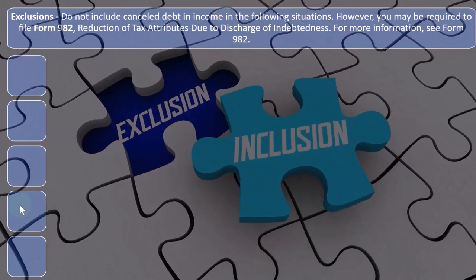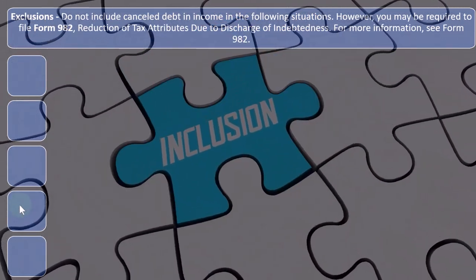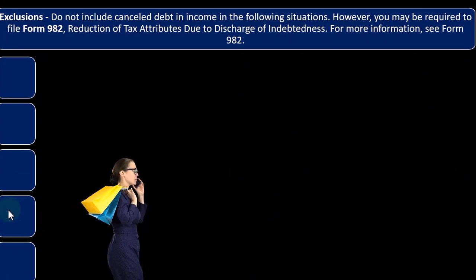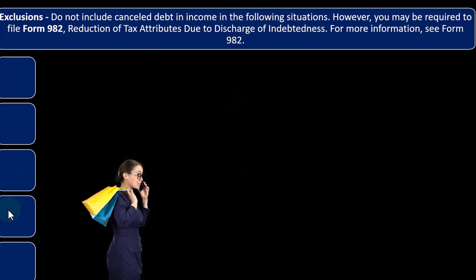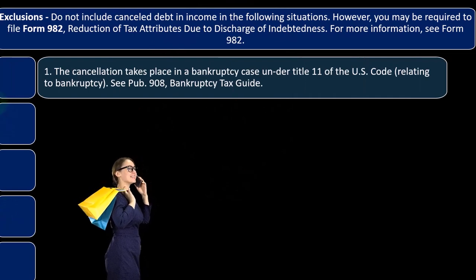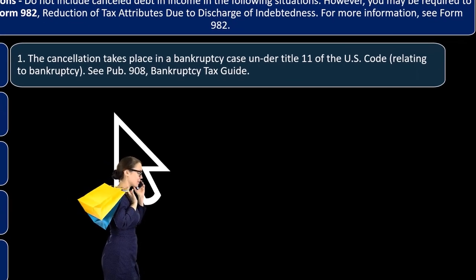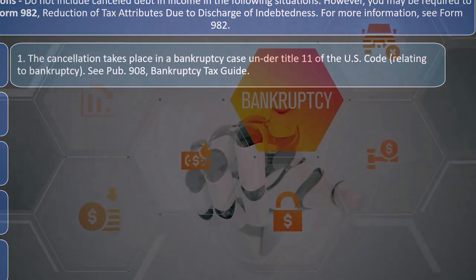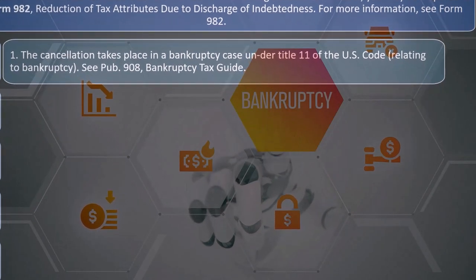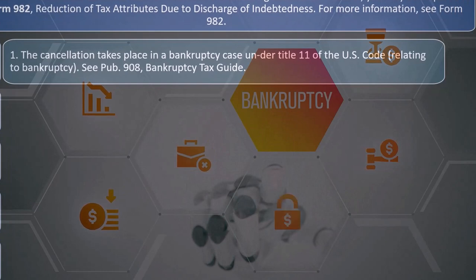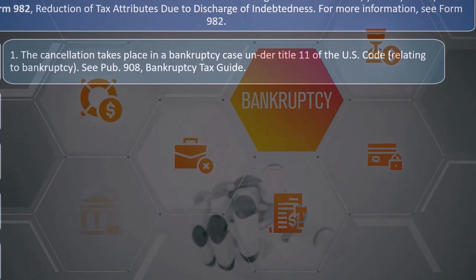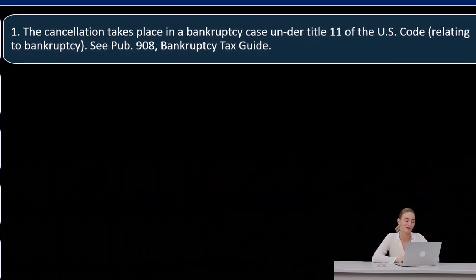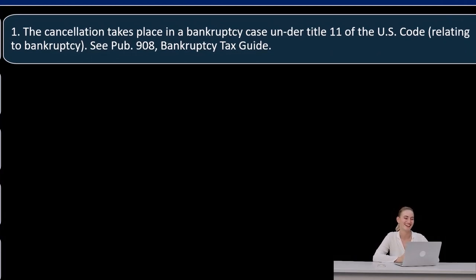Exclusions: do not include canceled debt in income in the following situations; however, you may be required to file Form 982, Reduction of Tax Attributes Due to Discharge of Indebtedness. See Form 982 and its instructions on the IRS website. Exclusion 1: the cancellation takes place in a bankruptcy case under Title 11 of the U.S. Code relating to bankruptcy.